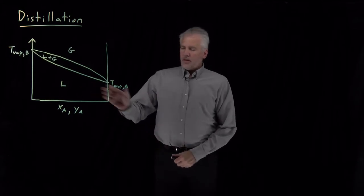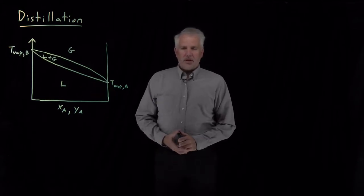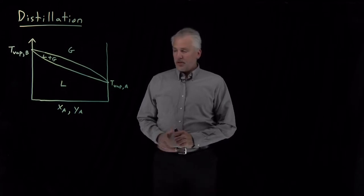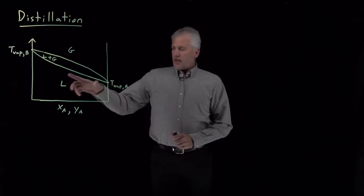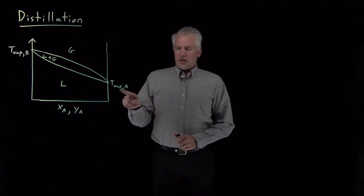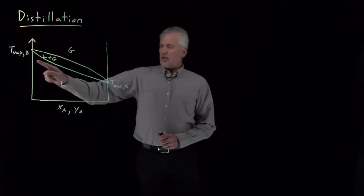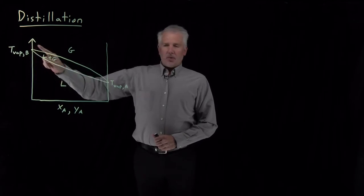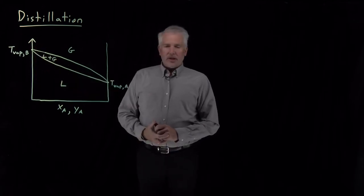All right, so we have an understanding of what a temperature composition diagram looked like for a solution that contains two components. One component in this diagram, the one with the lower boiling point, is the more volatile of the components. I'm calling that one A. Compound B with the higher boiling point is the less volatile component.